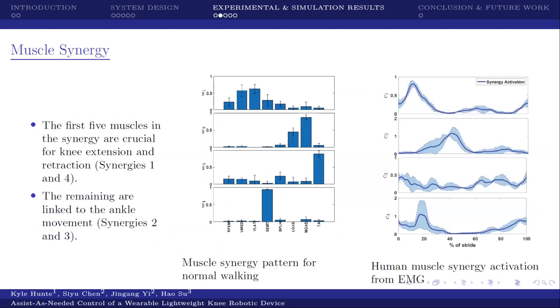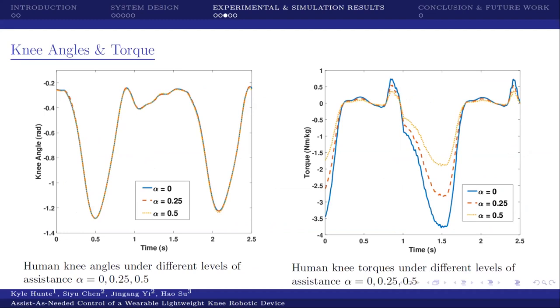In this slide where we begin with the muscle synergy, this is actually data collected from the experimental results. We show here on the left-hand image four synergies. Note that the first and fourth synergies are associated with the knee. Those are associated with extension and retraction, while the two synergies, the second and third, are associated with the ankle movement. On the human muscle synergy activation from the EMG graph, we know that the peaks in these graphs are associated generally with certain actions. For example, in the first graph we look at, the peak is associated with the person beginning to walk. Each peak is associated with a given action.